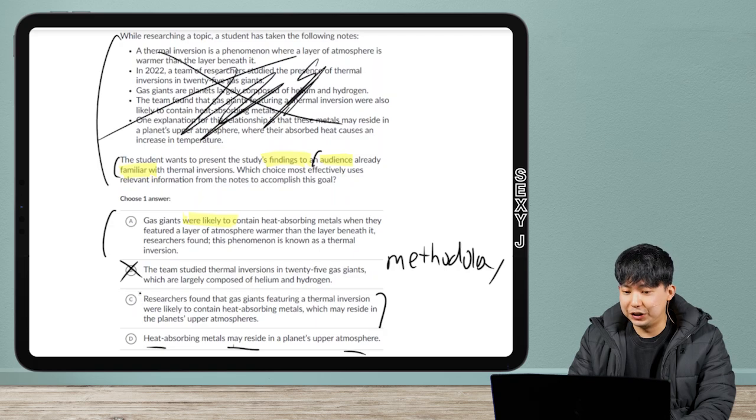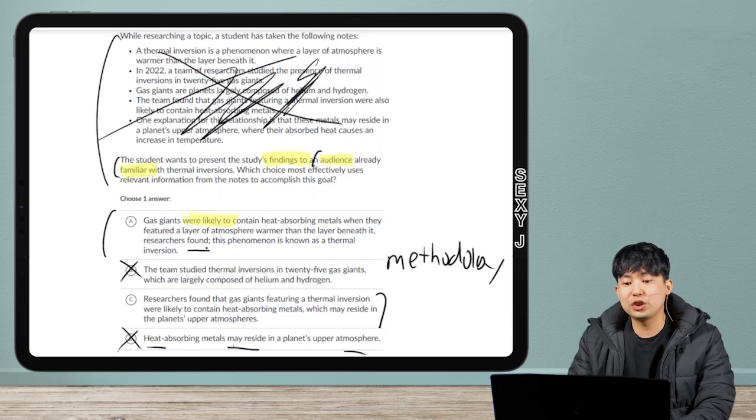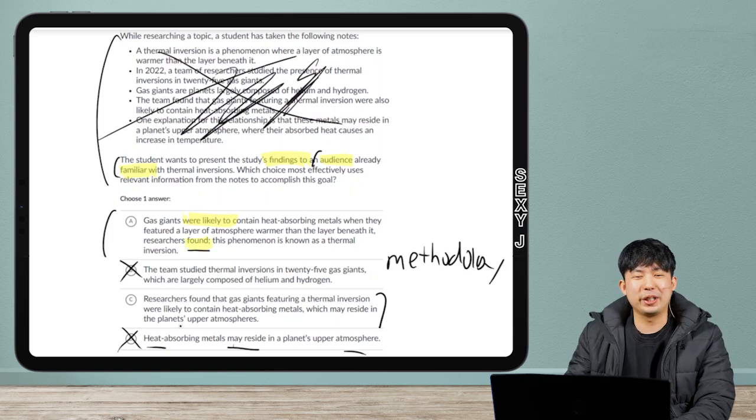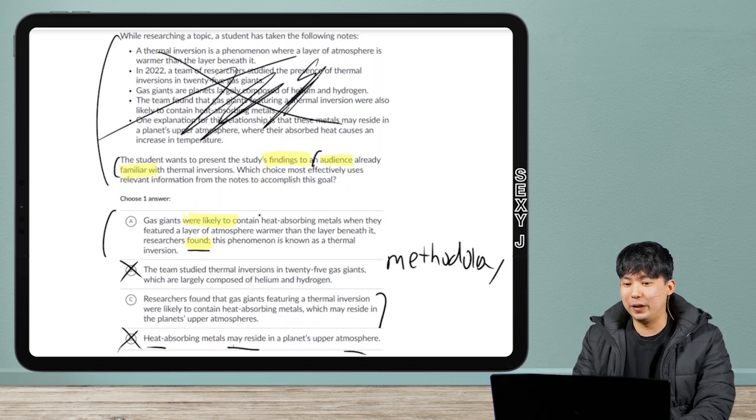Let's compare A and C, okay? Because, that's so little detail. Gas giants were likely to contain heat-absorbing materials when they featured a layer of atmosphere warming in the layer beneath it, researchers found. That's great, actually. That is a finding. That's really, really, really good. And, you guys know my pattern, right? If I'm talking it up, it probably means there's a trap coming after, or this is a trap.